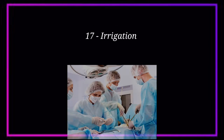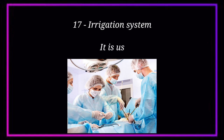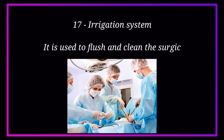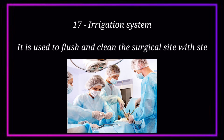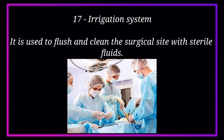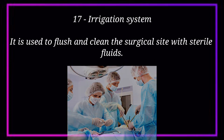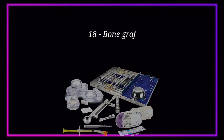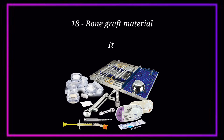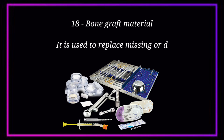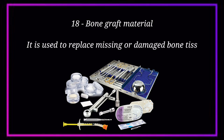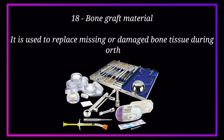Number 17. Irrigation System. It is used to flush and clean the surgical site with sterile fluids. Number 18. Bone Graft Material. It is used to replace missing or damaged bone tissue during orthopedic procedures.